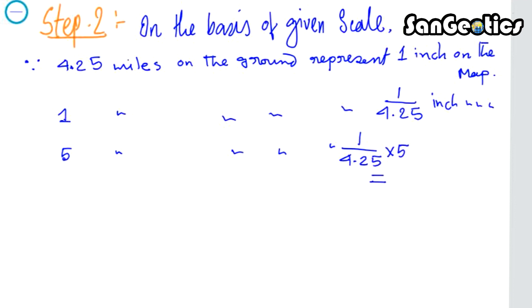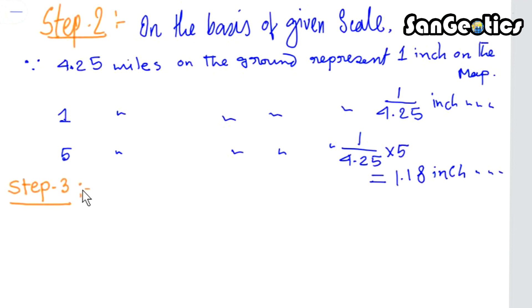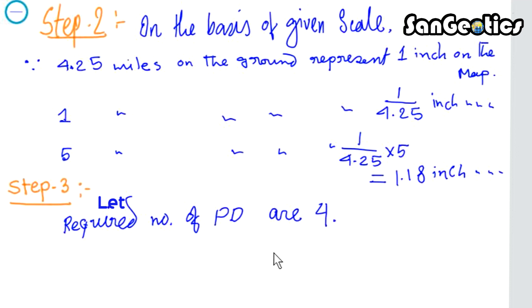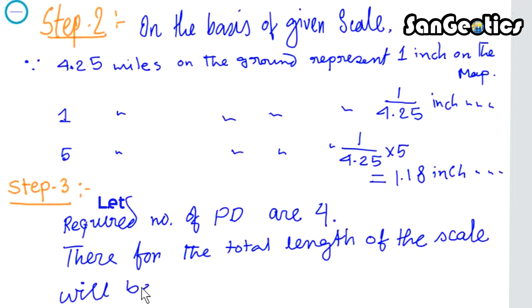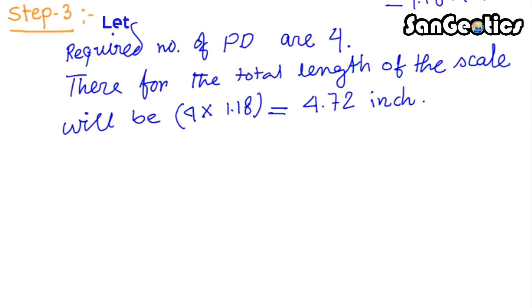That equals 1.118 inches on the map. Step 3: let the required number of primary divisions be four. Therefore the total length of the scale will be 4 × 1.118 = 4.72 inches. General instruction: total length of the scale should vary from 12 to 20 centimeters or from five to eight inches.